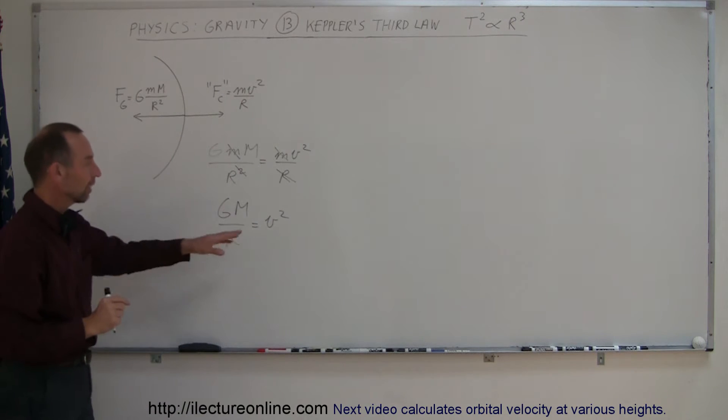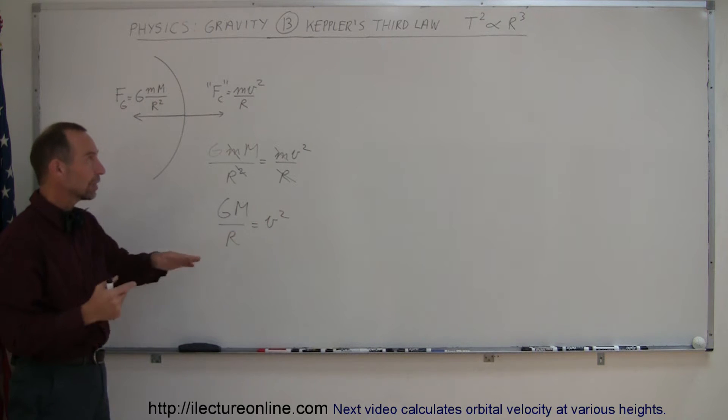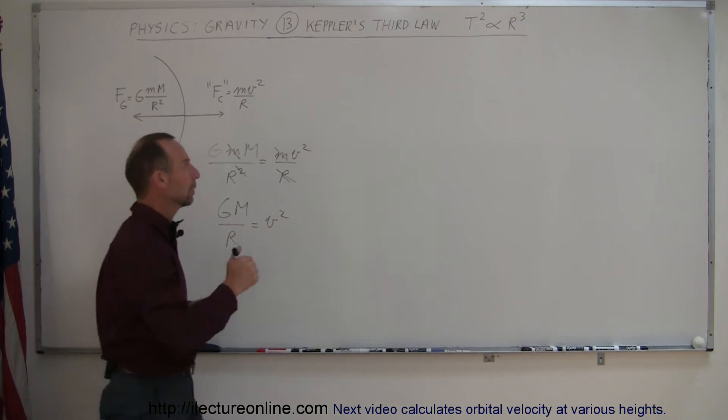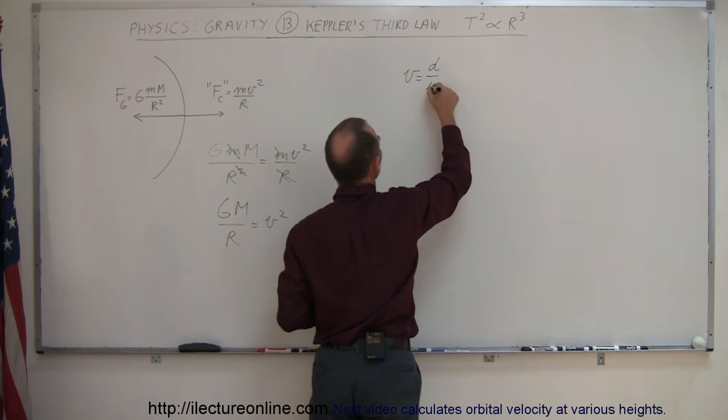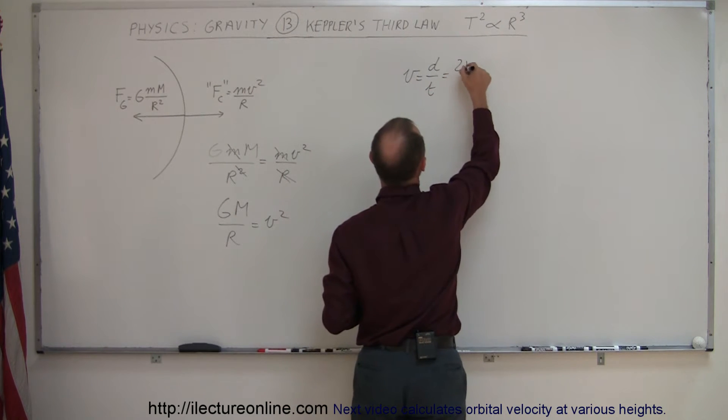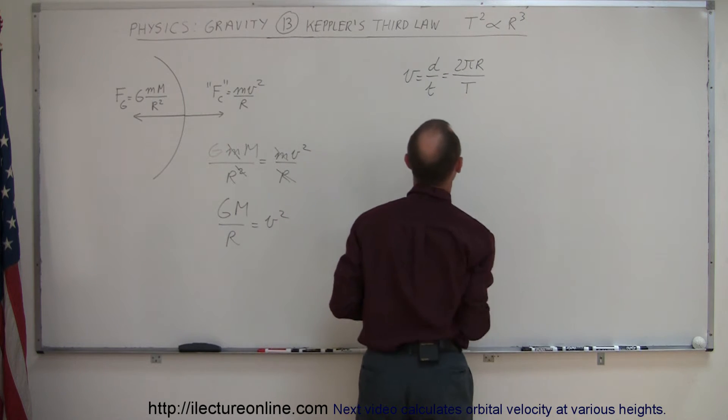Now, let's relate the velocity of the planet, be it Earth, be it any planet in our solar system, to the orbital period. And we can say, of course, that the velocity is equal to distance divided by time. The distance would be 2 pi times the radius, which is the circumference, divided by the orbital period.